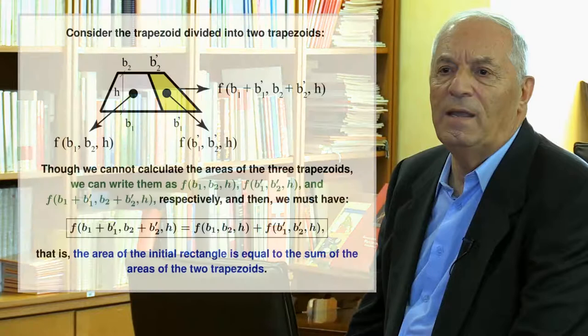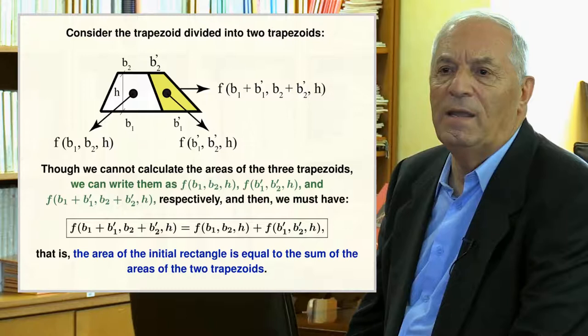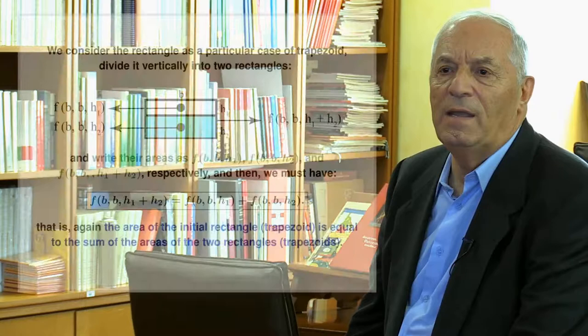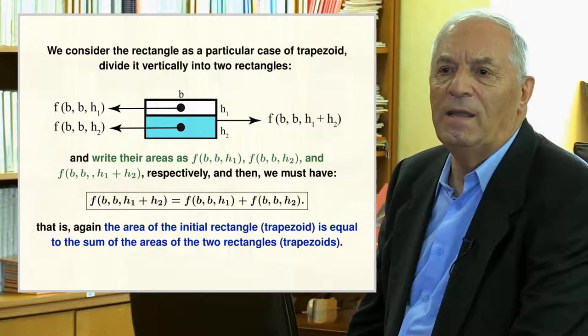First, we consider the trapezoid divided into two trapezoids. Though we cannot calculate the areas of the three trapezoids directly, we can write them in terms of the function f and the corresponding bases and heights as shown in the transparency. Forcing the area of the initial rectangle to equal the sum of the areas of the two trapezoids, we obtain the first functional equation. Second, we consider the rectangle as a particular case of trapezoid and divide it vertically into two rectangles, writing the areas in terms of f and the corresponding bases and heights, and obtain another functional equation.